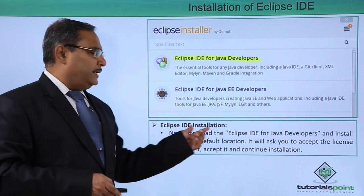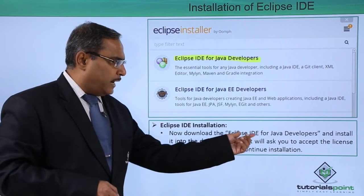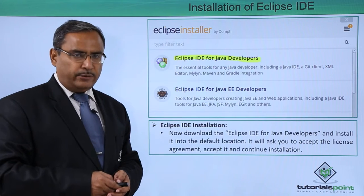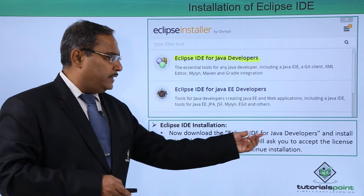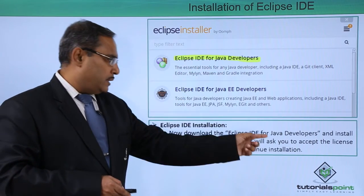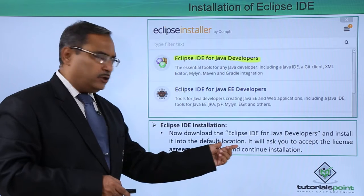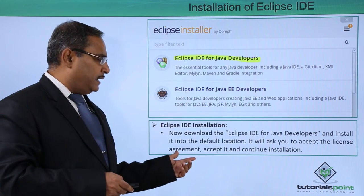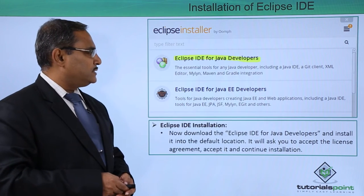Eclipse IDE installation next step: download the Eclipse IDE for Java Developers, because in our coding we will be using the language Java. Select the option Eclipse IDE for Java Developers, then install it into the default location. It will ask you to accept the license agreement — accept it and continue with the installation process.